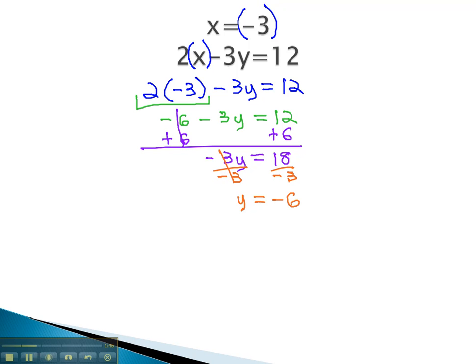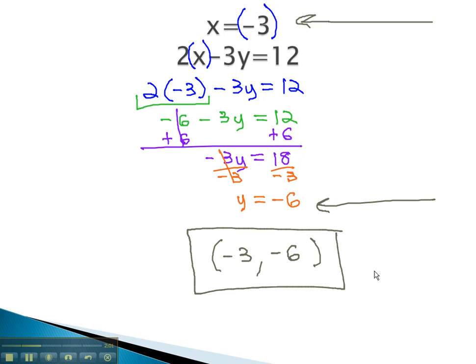We now know what each variable represents. The x is negative 3, the y is negative 6, and so we express it as an ordered pair (x, y): negative 3, negative 6. This is the solution to the system of equations.